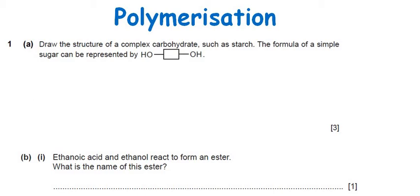Let's look at some topical questions of the IGCSE topic polymerization. The first question says: draw the structure of a complex carbohydrate such as starch. The formula of a simple sugar — the monomer for this complex carbohydrate — is presented as shown.